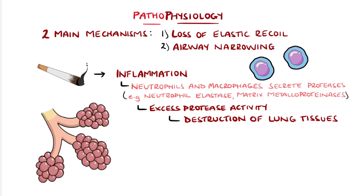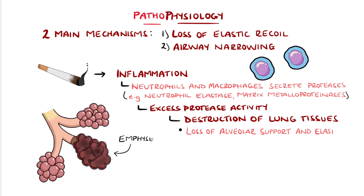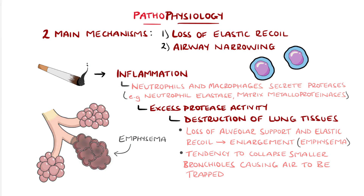This leads to less support for the alveoli and so a reduced elastic recoil, causing them to enlarge, giving emphysema. It also gives a tendency for the small airways to collapse during expiration due to reduced structural support. When this happens, air is effectively trapped, eventually causing hyperinflation.